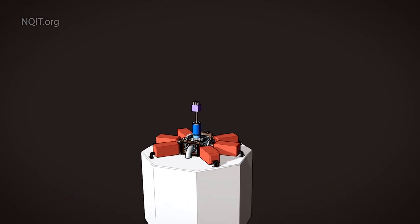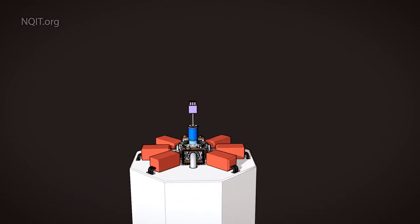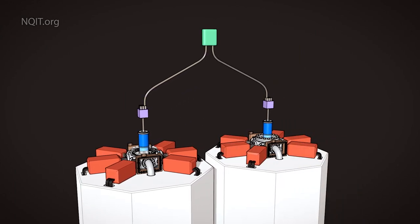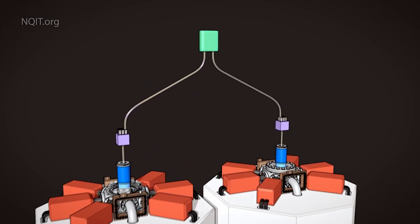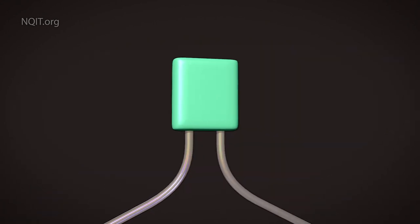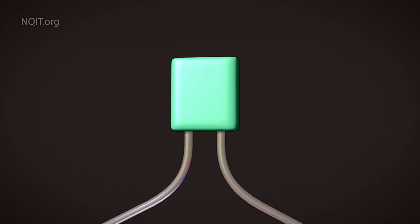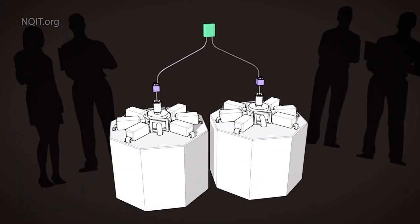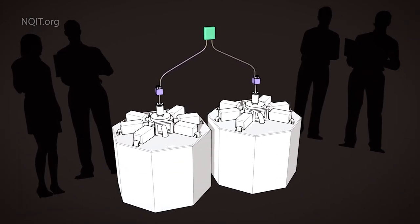This complete module is a small quantum processor, but now consider two linked modules. When photons meet at the entangler unit in the middle, the ions that created those photons become quantum entangled, and so the two modules combine as a single quantum machine.